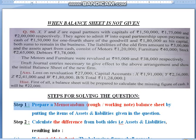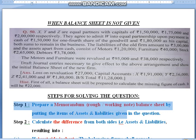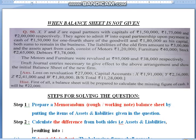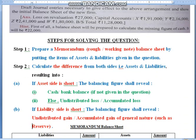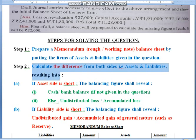The first step is to make a rough working note — a memorandum balance sheet — where you will put items of assets on the asset side (right side) and liabilities on the liability side (left hand side). Then you will calculate the difference of items presented on the asset and liability sides, and this difference will tell you the missing figure.